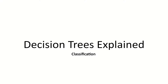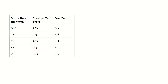Hi guys, in this episode I plan to explain decision trees for classification problems. So what exactly is a decision tree? Let's say for example we were to have some data here, including the study time of students, their previous test score, and whether they have passed or failed. How would we map study time and previous test score onto our target variable? For that we can use a decision tree.